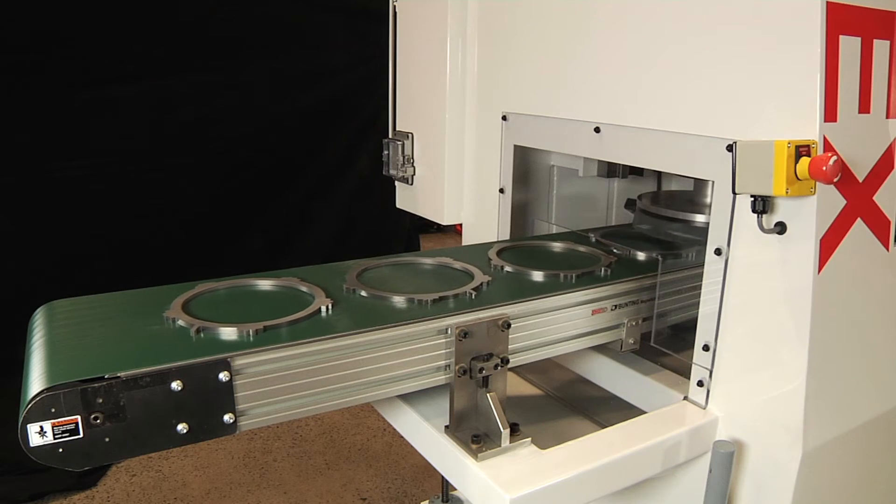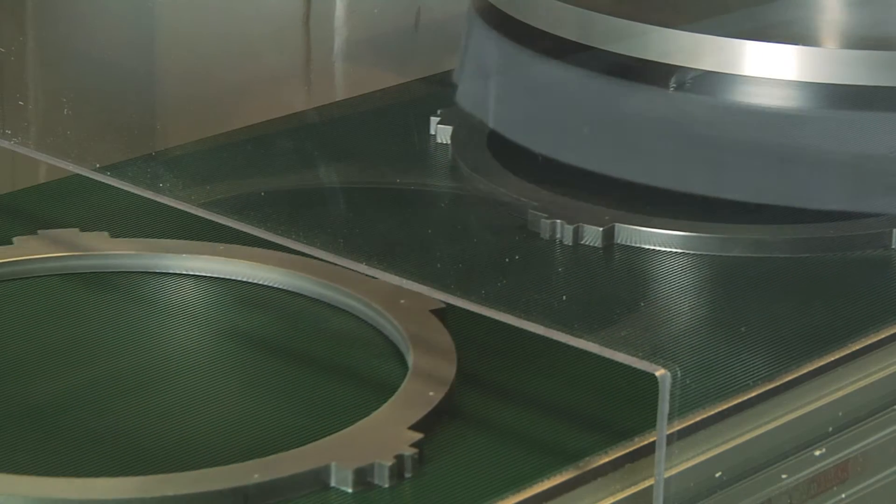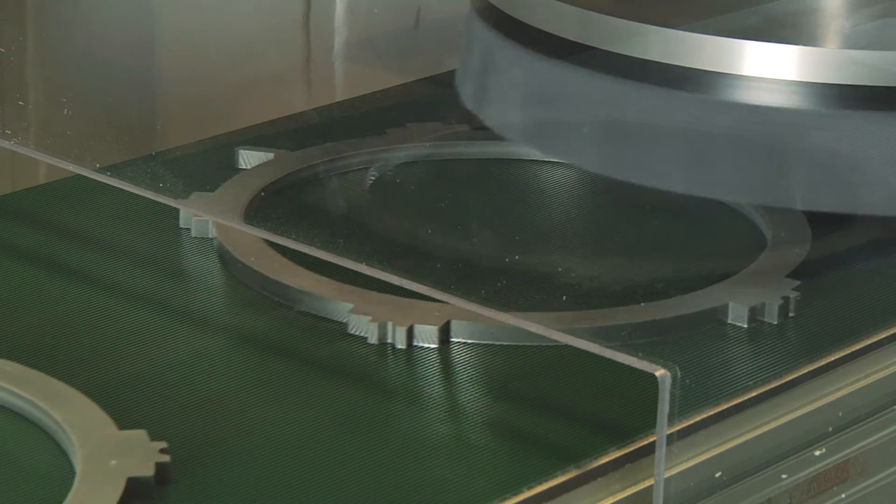The green parts enter the machine through a conveyor, and in seconds, an Abtex brush cleanly deburs the top of each part.